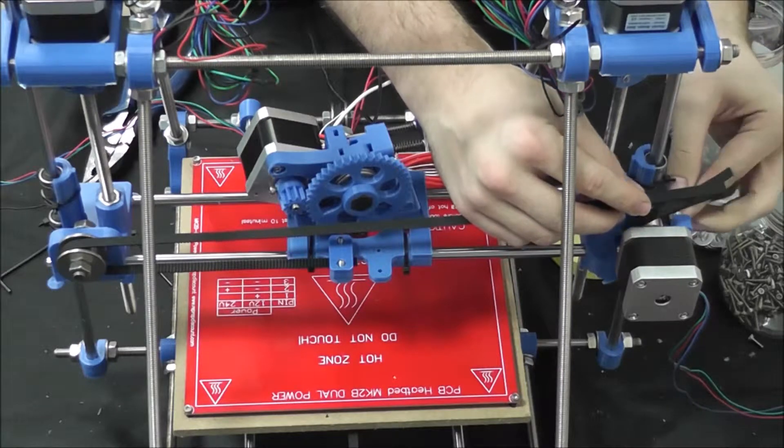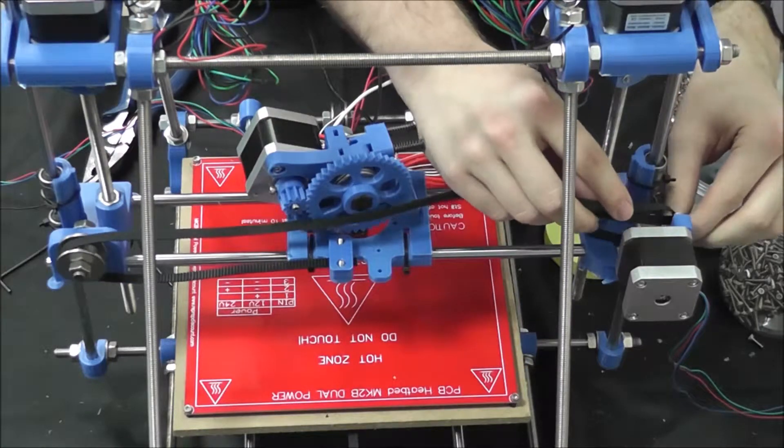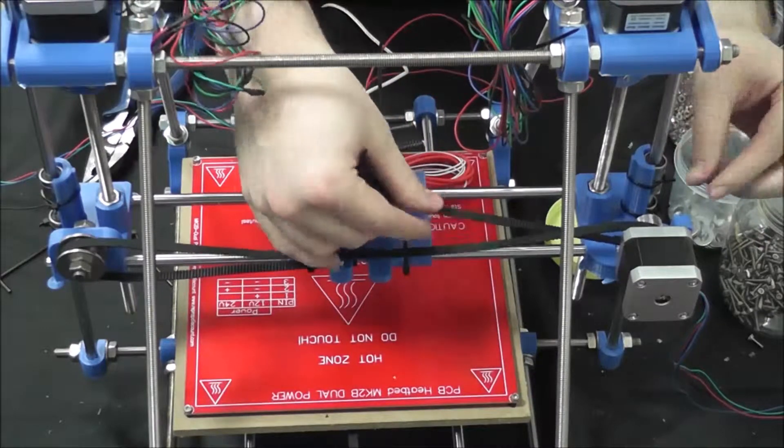Then you want to feed this around your roller bearing just like that, so it comes over there and then back around on this side, around the pulley. Now, because of the way it's on here, it could be a little bit tight, but there we are.